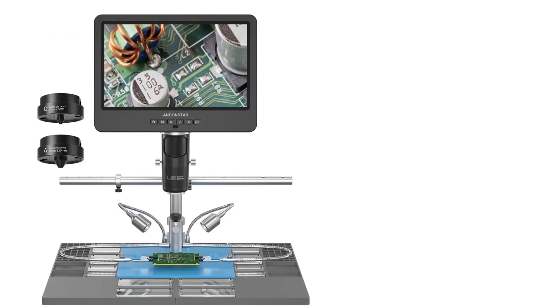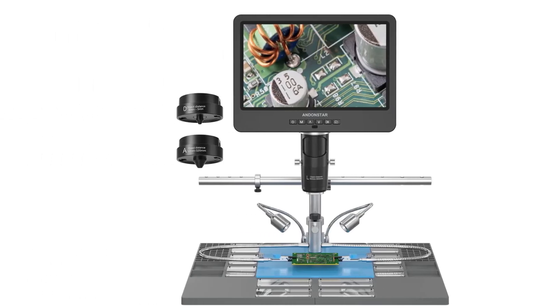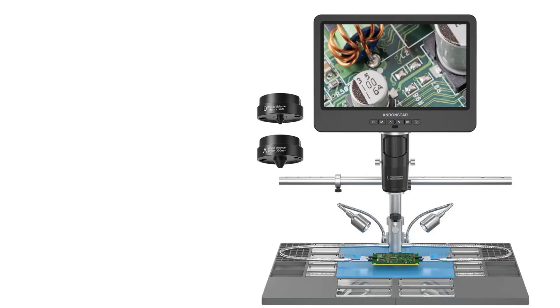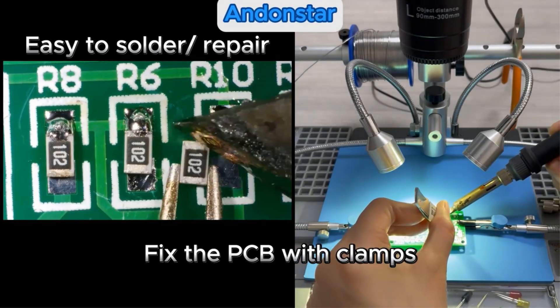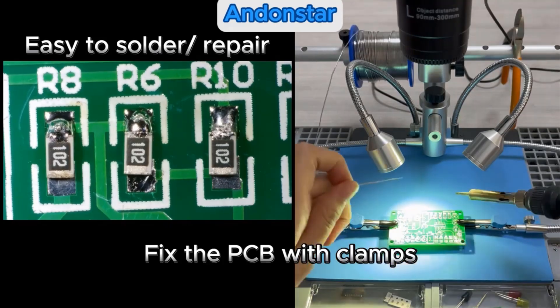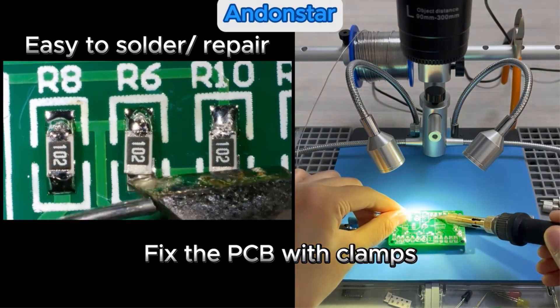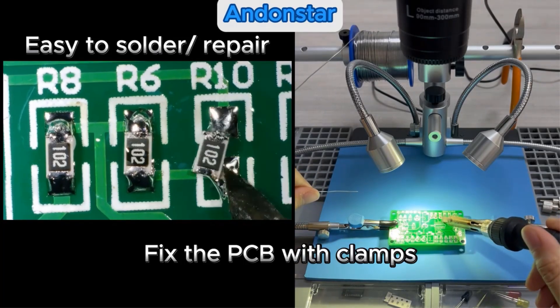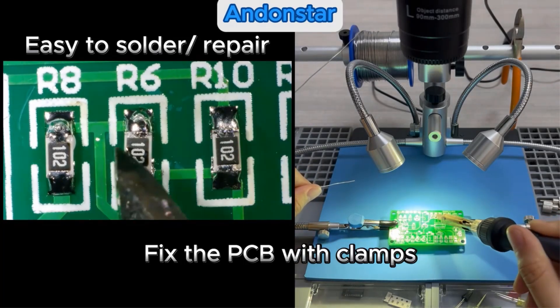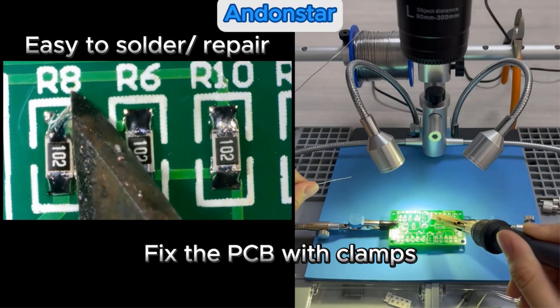It features a 7 or 10-inch screen, adjustable minimum focus distance of 4mm, and a range of lenses including A, D, and L for varying observation distances. The microscope is powered via USB and includes an upgraded metal stand, remote control, and necessary accessories, making it a comprehensive tool for detailed examination and analysis.